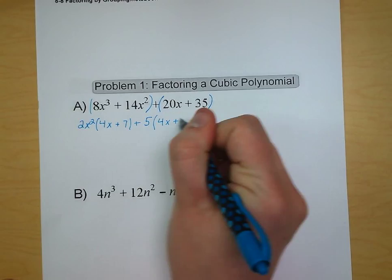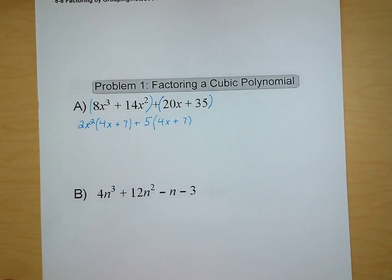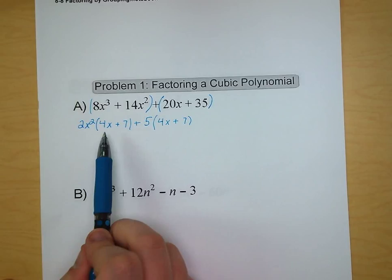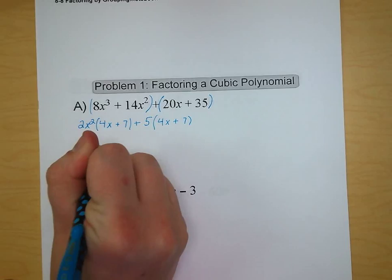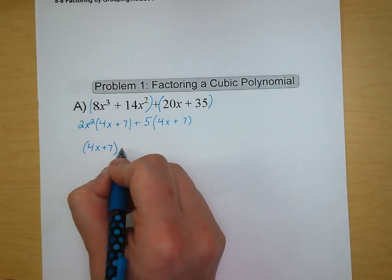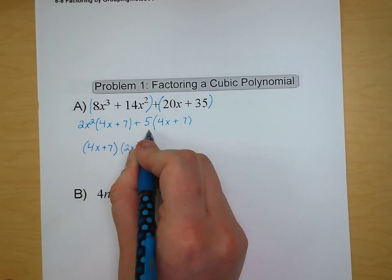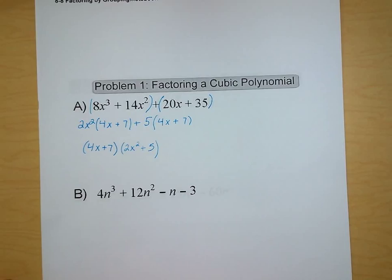This is where factoring by grouping comes in handy. We see that we have a 4x plus 7 term for each of our two components, so we can factor that out of the expression. We're going to write parentheses 4x plus 7. What's left when we remove it from the first term is 2x squared, plus sign, and when we took out 4x plus 7 from our second term, we're left with just a 5. Our simplified form is 4x plus 7 times the quantity 2x squared plus 5.